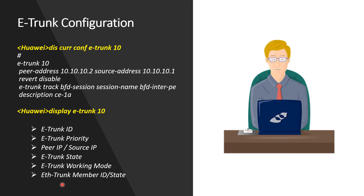The output also shows the reason why the master went down and why the backup became the master — there's a causation field under this output. These are the important things to look at while troubleshooting E-trunks in any Huawei environment with multi-chassis LAG. That brings us to the end of this session. If you have any questions about E-trunks or Ethernet trunks, feel free to drop a comment below — thank you for your time and I look forward to seeing you in the next session.